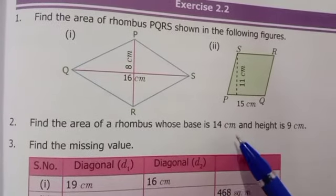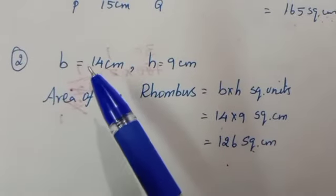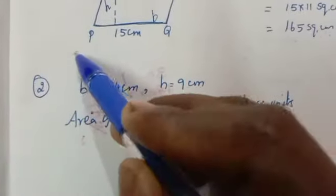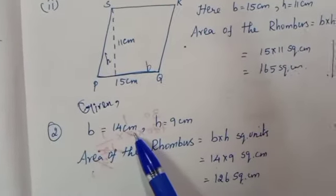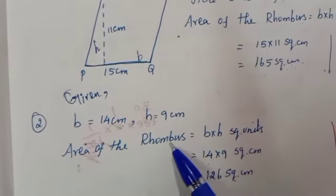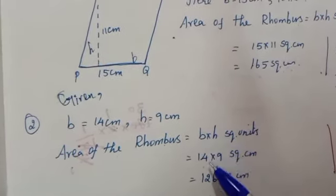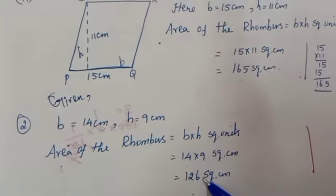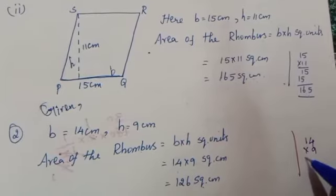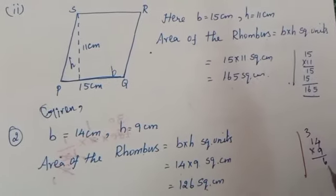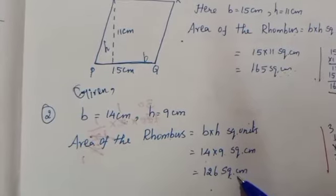Second question: find the area of the rhombus whose base is 14 centimeter and height is 9 centimeter. Given: base equals 14 centimeter, height equals 9 centimeter. Formula: B into H square units. 14 into 9 equals 126 square centimeter. These units are very very important.